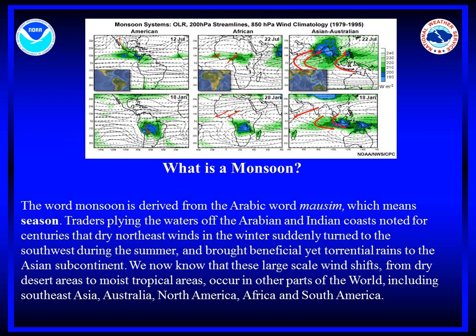The word monsoon is derived from the Arabic word masim, which means season. Merchants sailing between Europe and the Arabian and Indian coasts noted for centuries that dry northeast winds in the winter suddenly turned to the southwest during the summer months, and brought beneficial yet torrential rain to the Asian subcontinent.